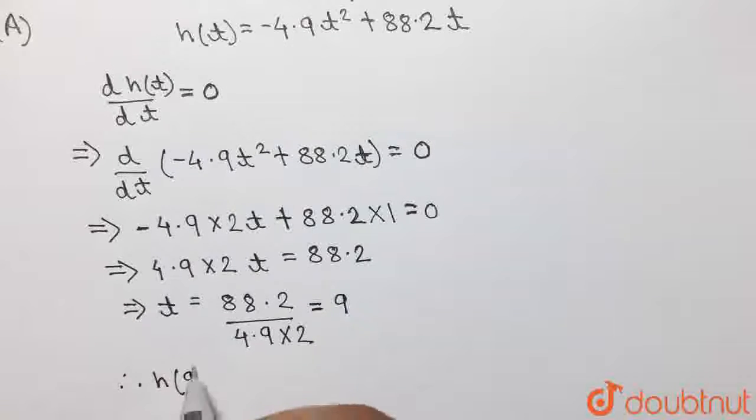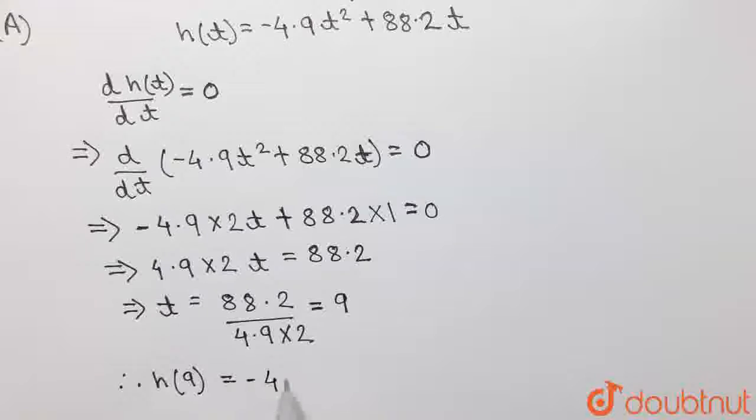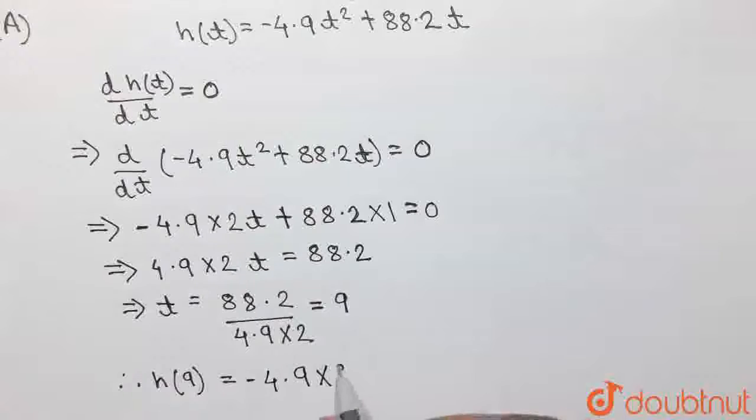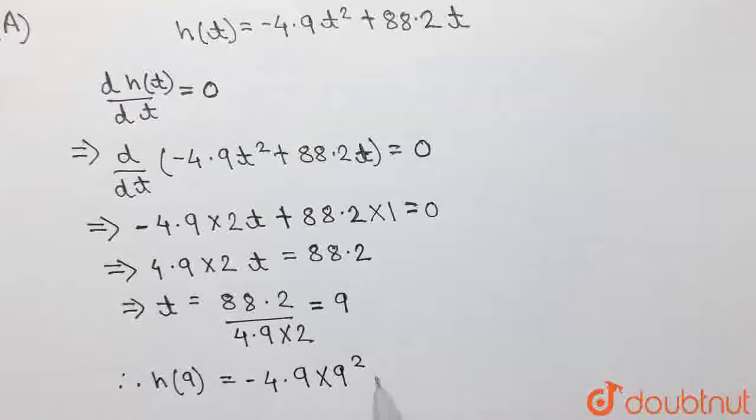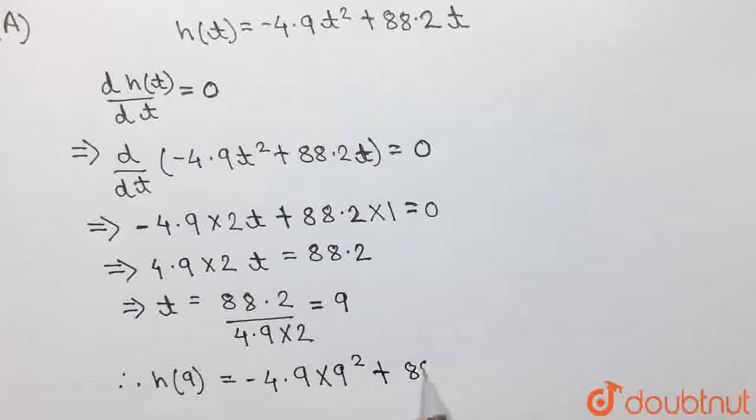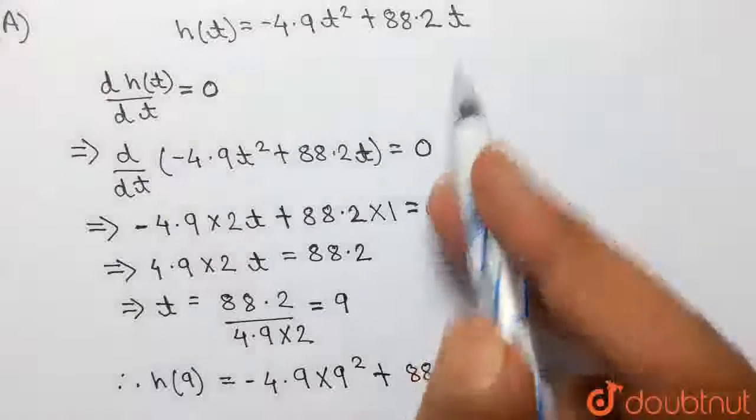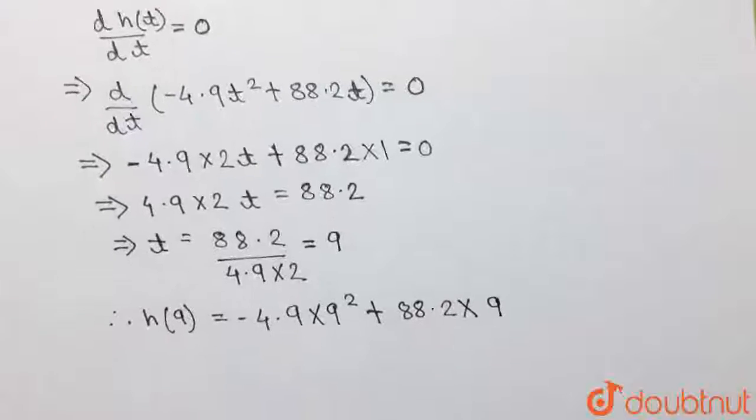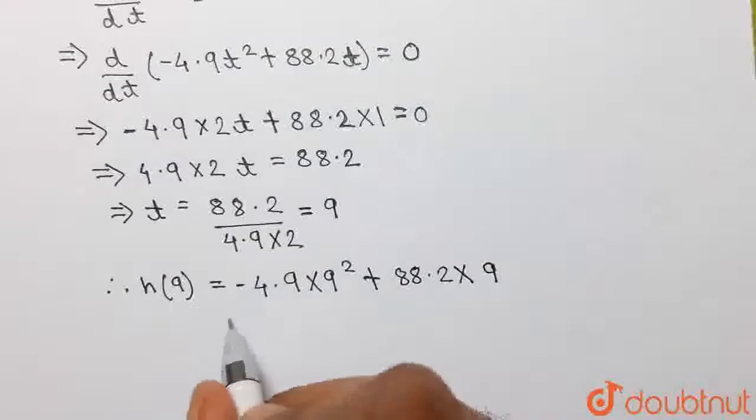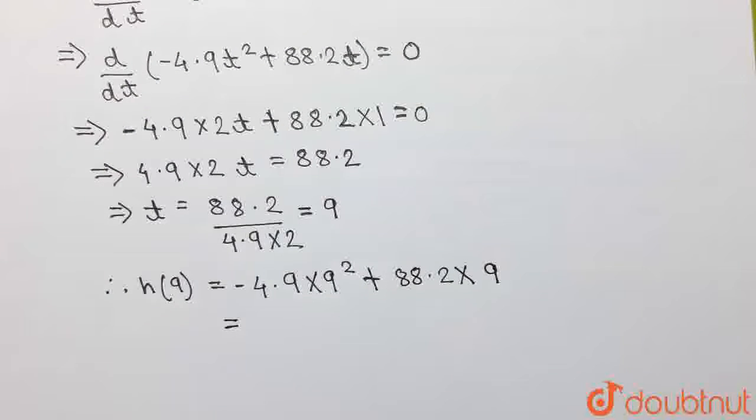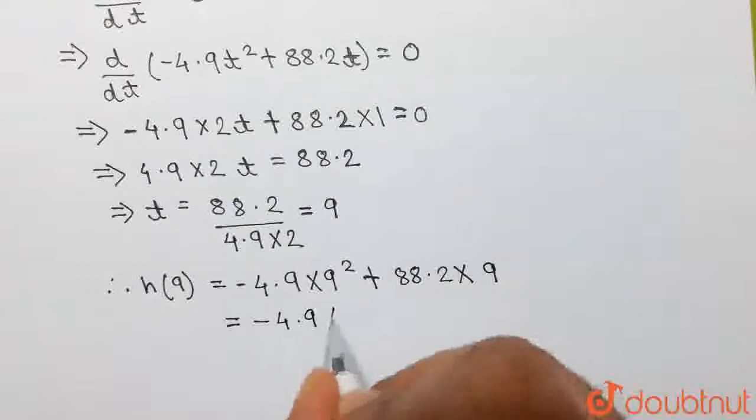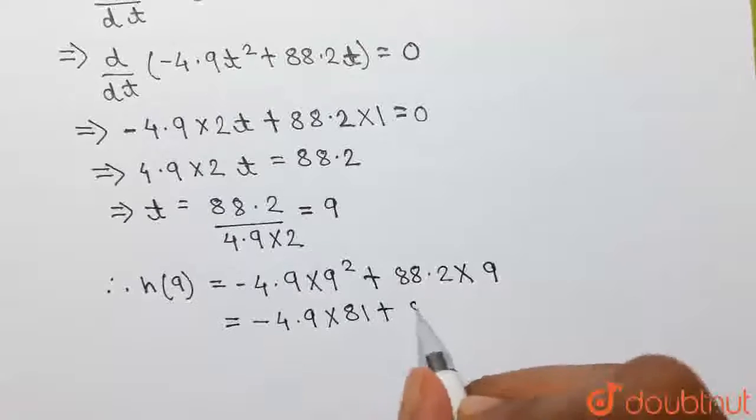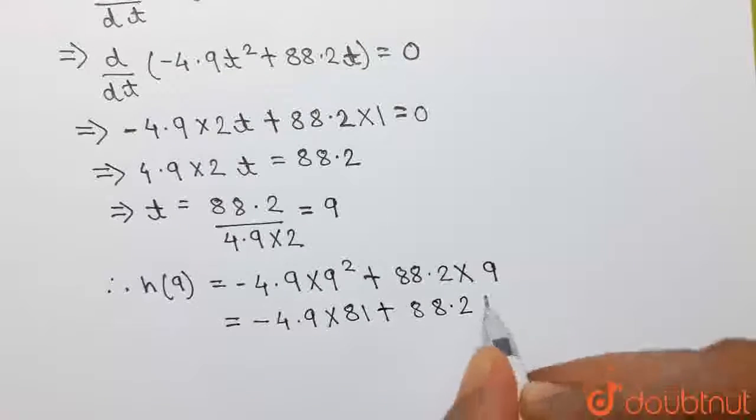So, h(9) will be given by -4.9 × 9² + 88.2 × 9. And now, simplifying this expression, we can write -4.9 × 81 (as 9² = 81) + 88.2 × 9.